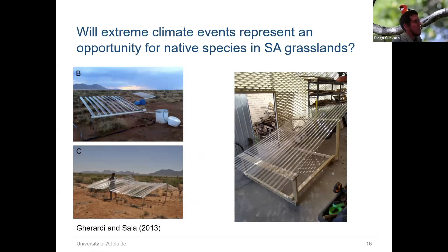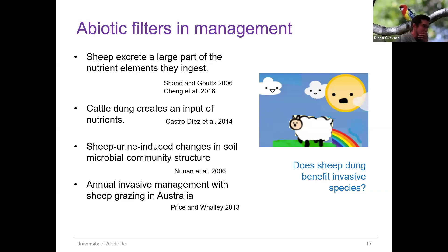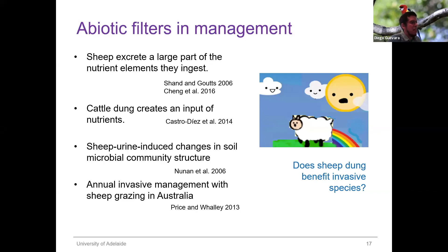Another part of my PhD will be about abiotic filters in management. We already talked about why it's important to consider the amount of nutrients in the soil and how this benefits invasive species. In relation to management, we know that sheep excrete a large part of the nutrient elements they ingest, meaning that dung in general creates an input of nutrients into the soil — even to the point that the urine of sheep has been found to induce changes in the soil microbial community. In Australia, sheep are used to control the biomass of invasive species, but at the same time this could be benefiting the invasive species for the next generation, because all the dung is left in the soil with all the nutrients.